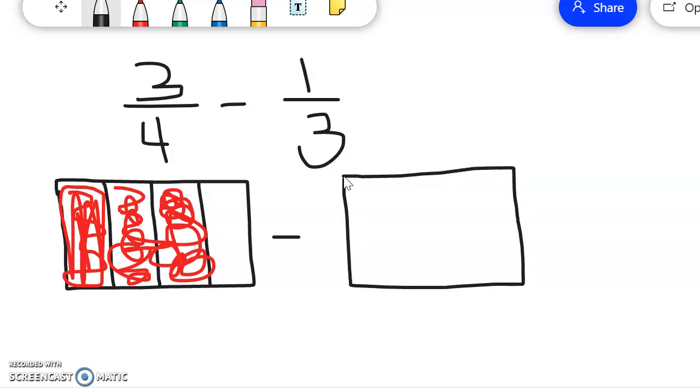And this one I'm going to break into three parts because my denominator is three, but I'm going to use horizontal lines, which goes from left to right. So one, two, three. And I'm going to shade in one part to show one third.